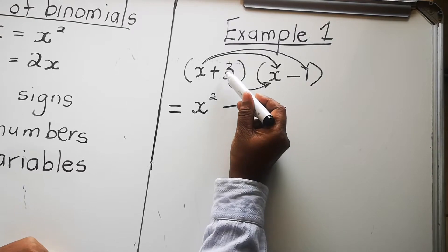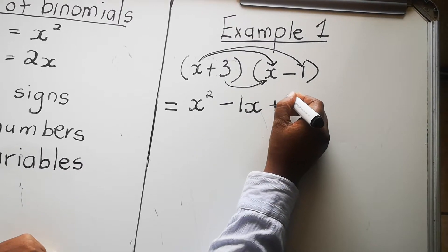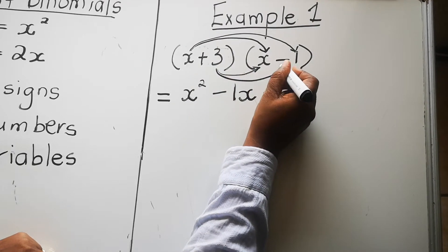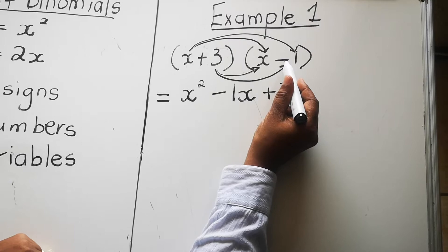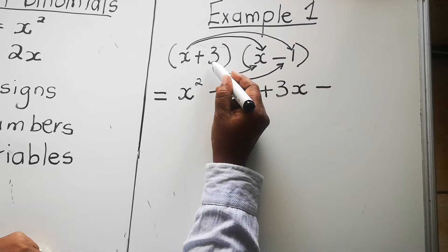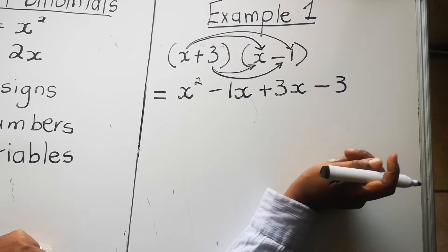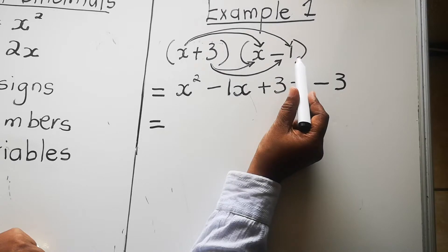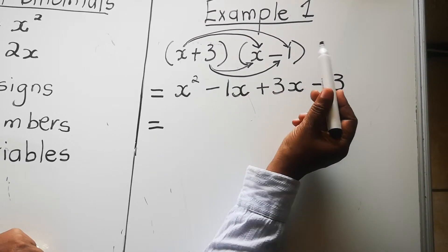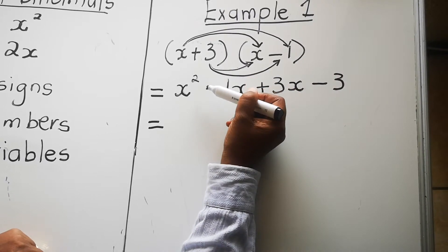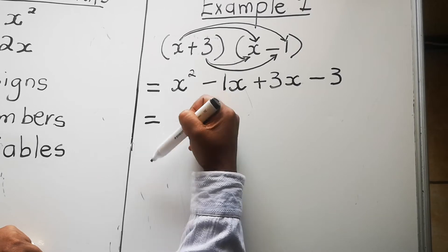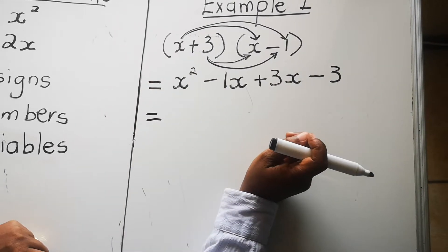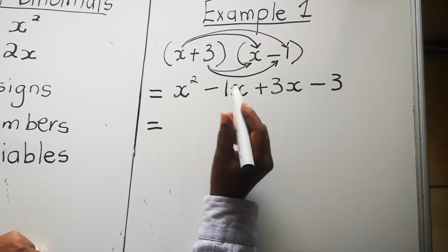When multiplying signs: same signs give positive, different signs give negative — that's not hard. Numbers: three times one is three. Variables: only x. Then the last multiplication: positive times negative, not the same, so it's negative. Numbers: three times one is three. That finishes the expansion. Note: what we have now is an expression — an expression has no equals sign. An equation has an equals sign somewhere. When solving an expression you do not write an equals sign at the beginning.